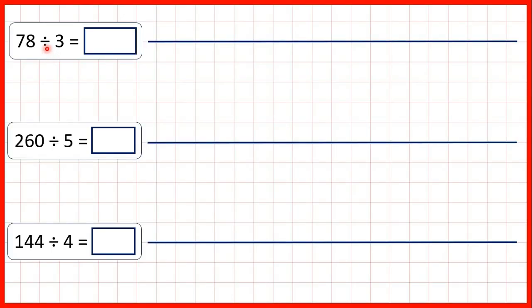Here we have some division questions. We know that one way to divide is to count up in steps of the divisor until we get to the dividend. But for this first question, it would take us a very long time to count up in steps of 3 until we got to 78.